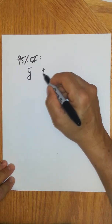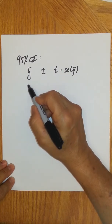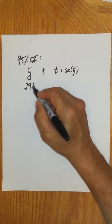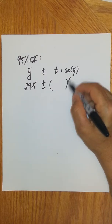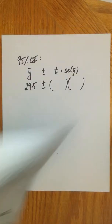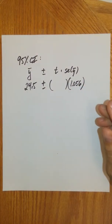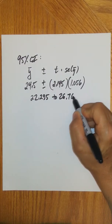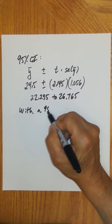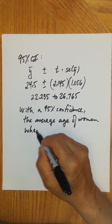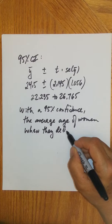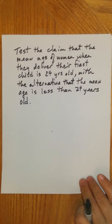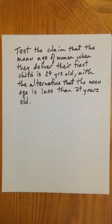So when we did this example, we got this info box, and I went ahead and figured out the standard error, S over square root of N, because we're going to use that for both the confidence interval and hypothesis test. Now let's check conditions. In the other video, we showed the normal probability plot was very linear, the histogram was symmetric unimodal with no outliers, and the box plot was symmetric with no outliers. Representative sample was met, the 10% rule was met, and independence — the age of one mother delivering her first child isn't going to affect another mother's age. And random selection. So we're good to go.